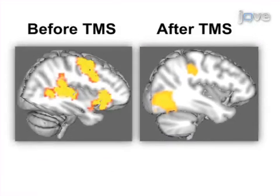Ultimately, fMRI can map TMS-induced effects. The data showed that after TMS, there is a functional reorganization in the auditory network.